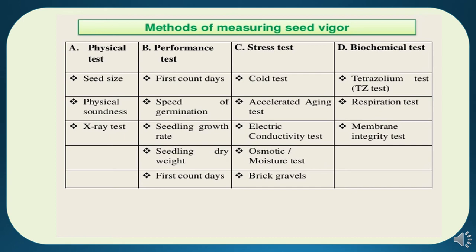The third type is stress test, under which there are various tests like cold test, accelerated aging test, electric conductivity test, osmotic and moisture test, and brick gravel test. The fourth type is biochemical test, which includes tetrazolium test, respiration test, and membrane integrity test. These are the various tests, each having different bases for measuring seed vigor.